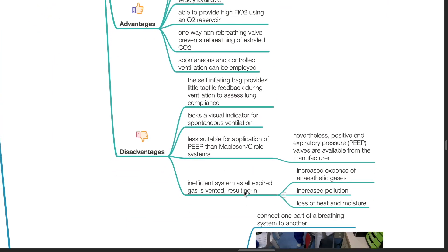Disadvantages. The self-inflating bag provides little tactile feedback during ventilation to assess lung compliance. It lacks a visual indicator for spontaneous ventilation. It is less suitable for application of PEEP compared to the Mapleson and Circle systems. It is an inefficient system as all expired gases are vented, resulting in increased expenses of anesthetic gases, increased pollution and loss of heat and moisture.